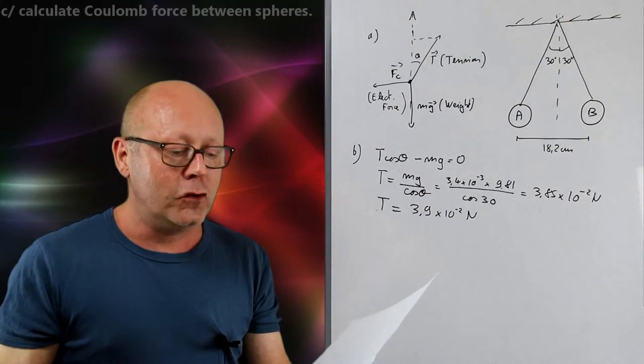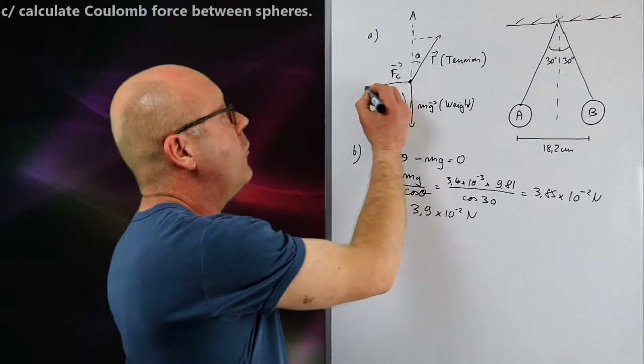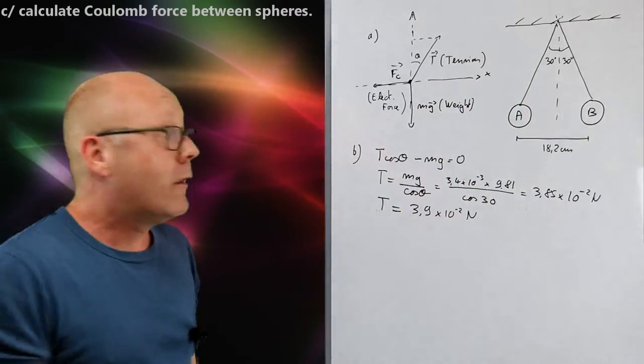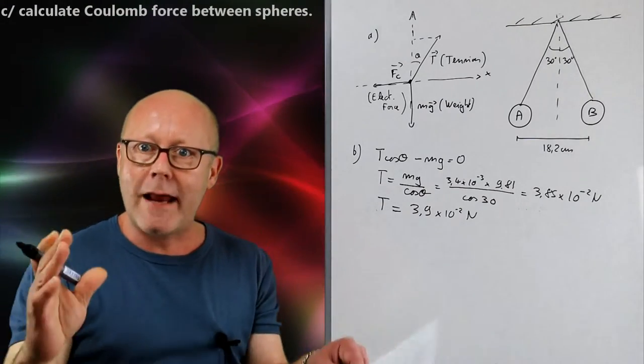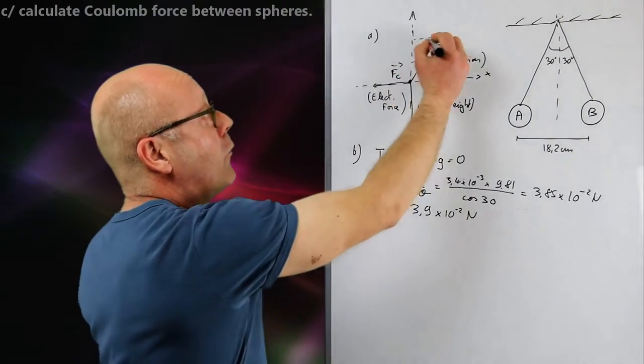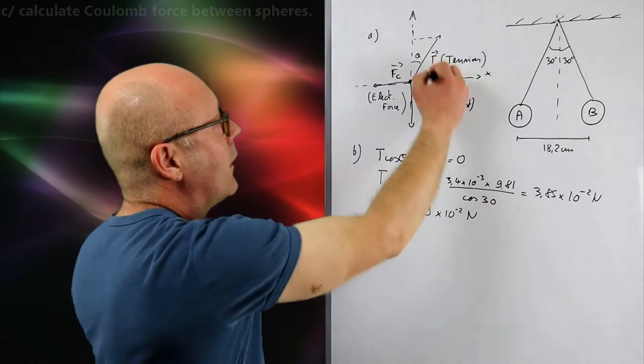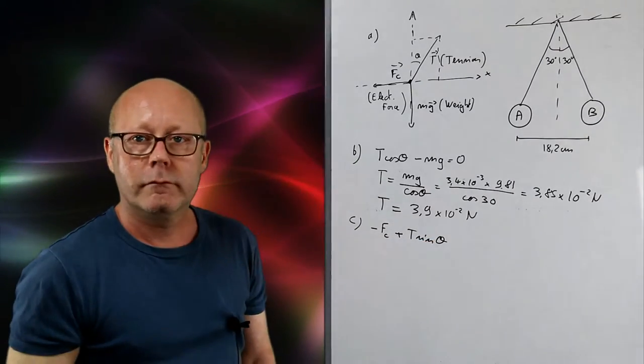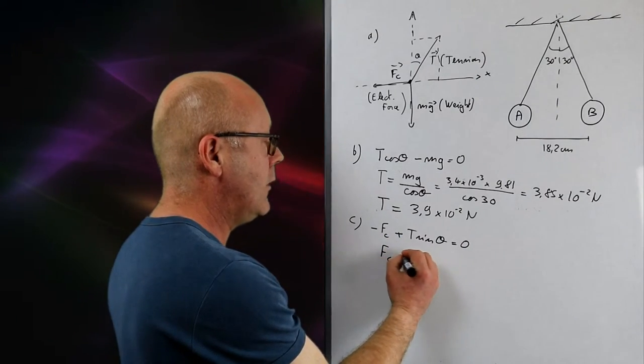Question C. Calculate the Coulomb force between the spheres. Here they're asking you for this force. Well, basically you can just look at the x-axis this time. The forces are balanced also because the spheres are not moving. They're not moving either horizontally, they're in balance. So I can actually just list the forces. I will have the Coulomb force, so minus F Coulomb, plus the projection of T on this axis, so T sine theta. And that's equal to zero. So I can find the Coulomb force equals T sine theta.